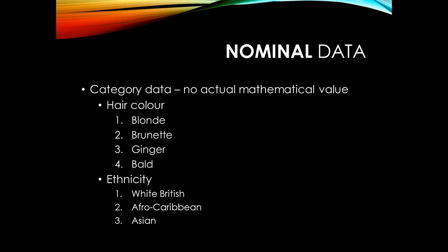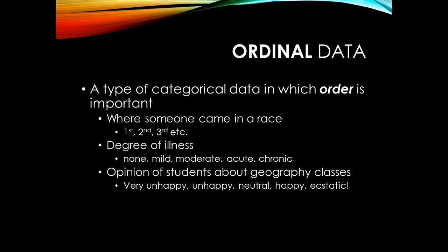That's what we mean when we say there's no mathematical value to these categories. You could do the same with gender, ethnicity, religion, or a whole range of subjects where you're just giving a number to each box and people fall into one or another of those boxes. That is nominal data.